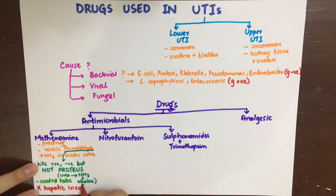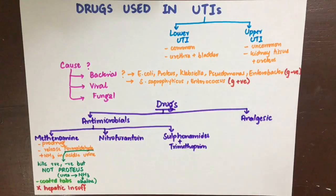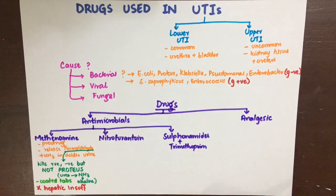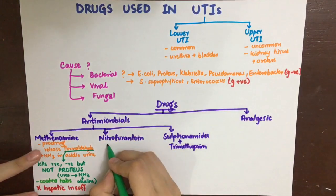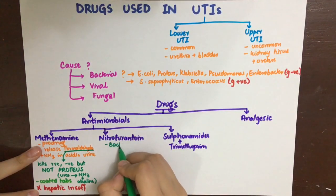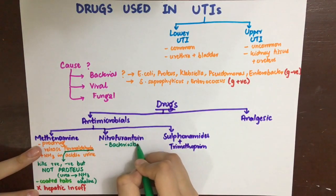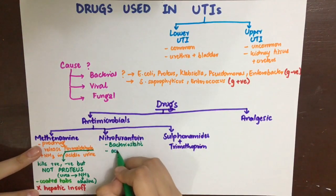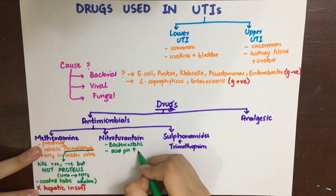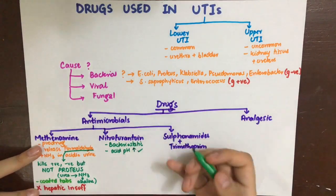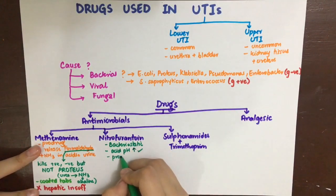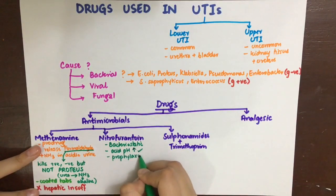One important side effect: methanamine should not be given to patients with hepatic insufficiency, because ammonia is produced and ammonia needs to be metabolized in the liver.